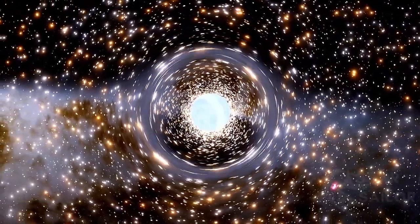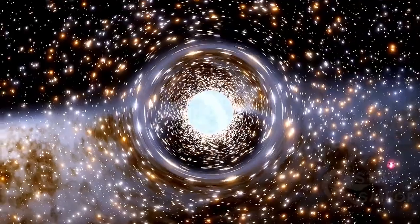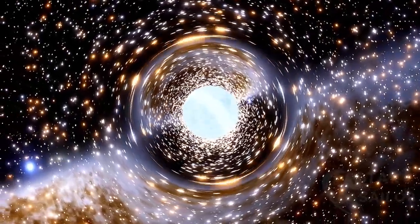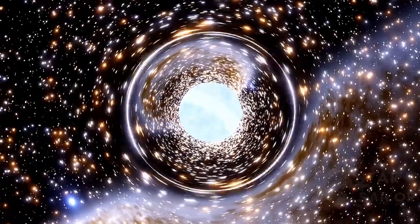The pulsar has twice the mass of the Sun, compressed into just 12 miles in diameter. It spins on its axis 100 times per second, which is equivalent to 13.7 million miles per hour.